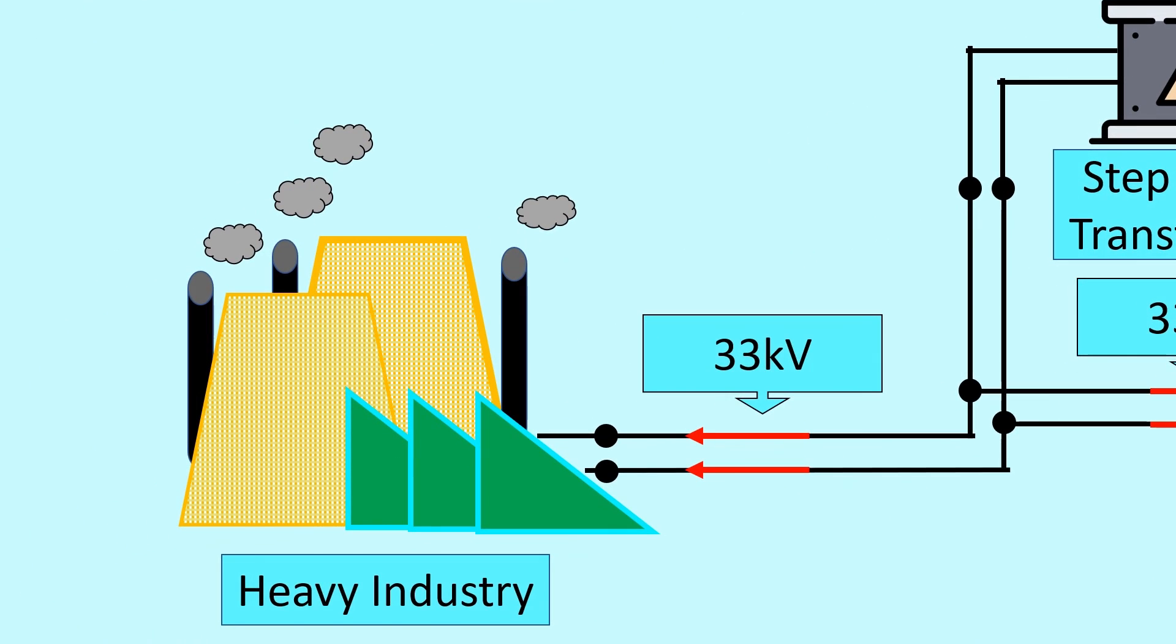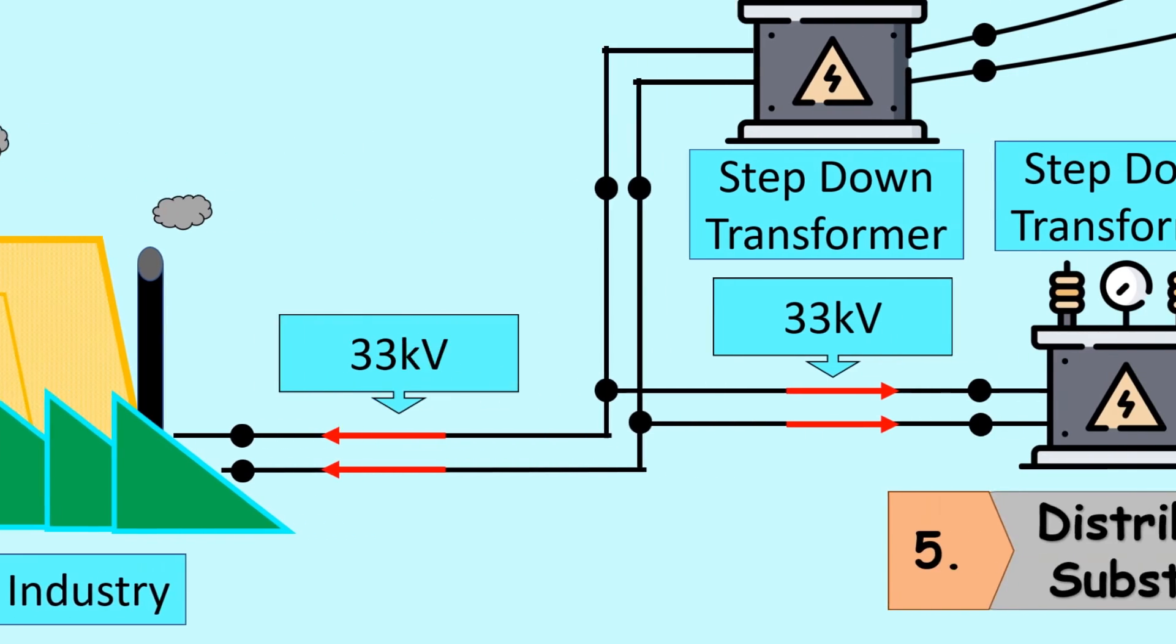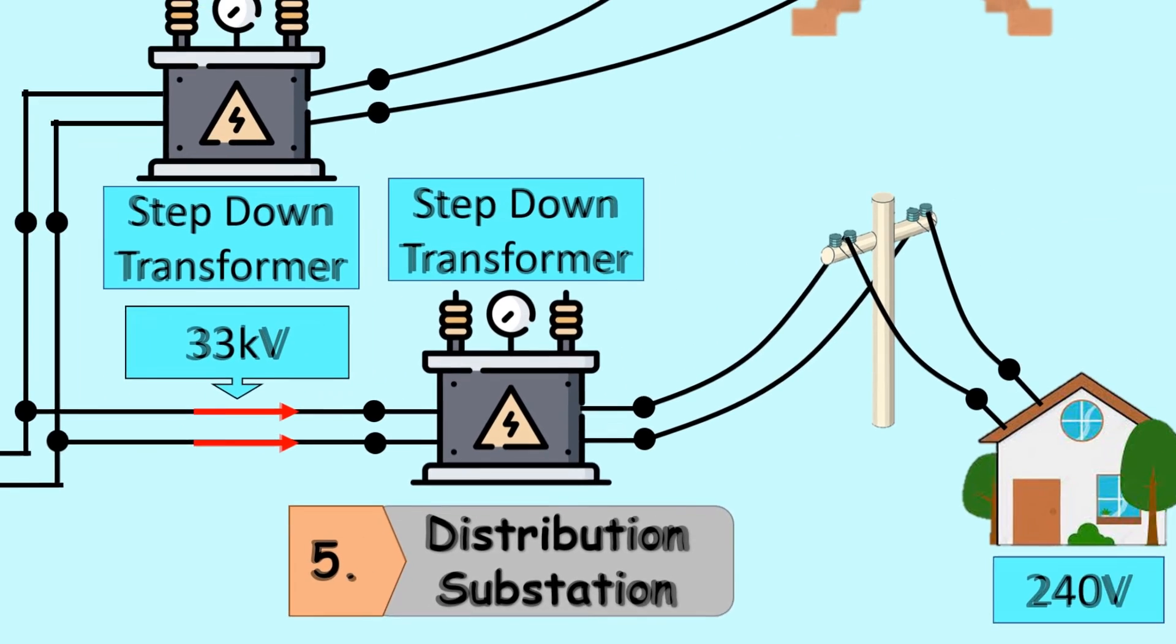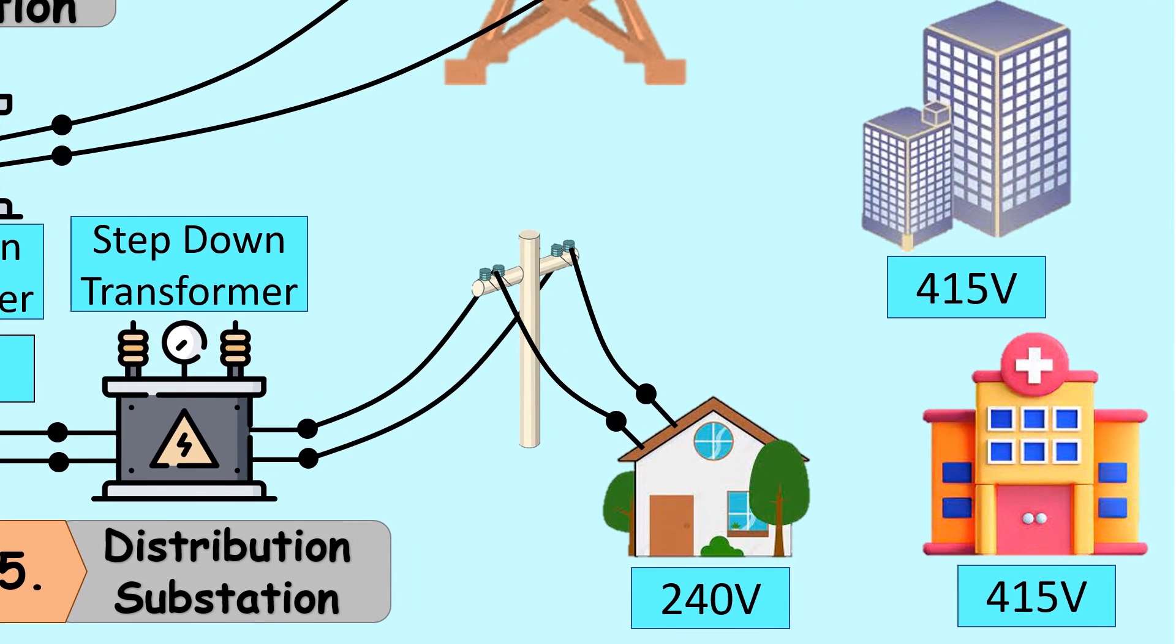Heavy industry factory will receive 33 kilovolt voltage. The fifth place is the distribution substation. Finally, the end users will use 415 volts or 240 volts.